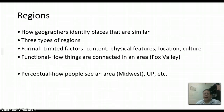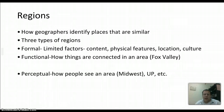Regions are a little different. Regions take places and figure out which ones are similar. There are three types. Formal regions are defined by limited factors like physical features or location — think the Midwest or North America as a location-based region, or the Rocky Mountains as a physical region. Each has certain criteria that must be met to qualify as that kind of region.